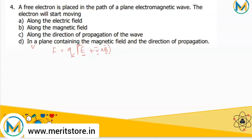Since the electron is at rest, the Lorentz force acting on it becomes F = q(E⃗ + 0 × B⃗). The magnetic term becomes zero because velocity is zero, so F = qE⃗. This shows the electron will move in the direction of the electric field. The correct answer is along the electric field direction.